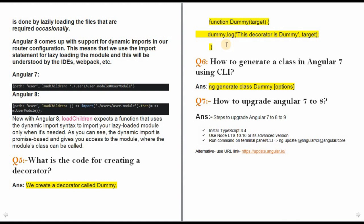Question number 6: how do you generate a class in Angular 7 using the CLI? The answer is the ng generate command. You use ng generate (or ng g) to generate components, but if you want to generate a class specifically, you use ng generate class and define the class name.